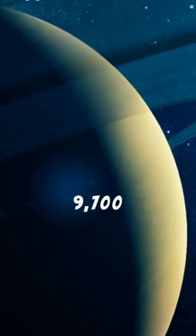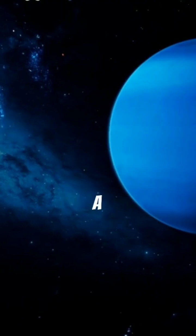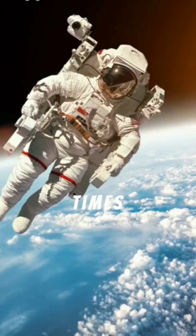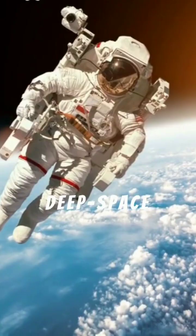Uranus, nearly 2,900 days, 8 years. Neptune, a staggering 5,240 days, 12 years. These times underscore the challenges of deep space exploration.